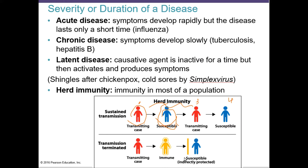When transmission is terminated, that's where we have herd immunity. One person is sick, but the next person is immune — for example, because they were vaccinated. Vaccination is the way to acquire herd immunity. That immune person creates a barrier, preventing the sick case from infecting the next susceptible person.